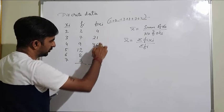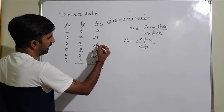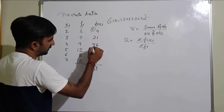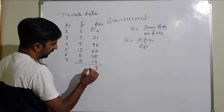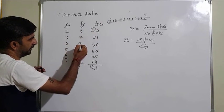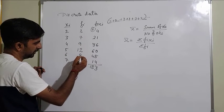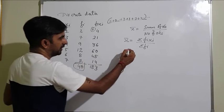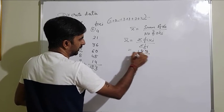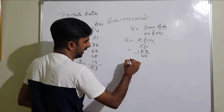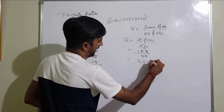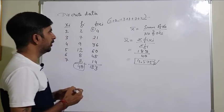Adding all Fi×Xi values gives 183, and the sum of all frequencies (Σ Fi) is 40. So the mean is 183 divided by 40, which equals approximately 4.575. This is the mean of the given discrete data.